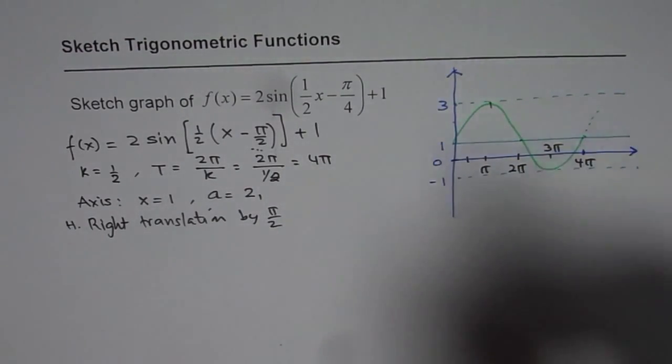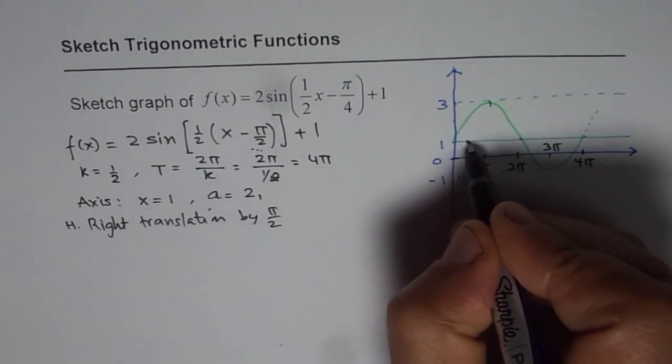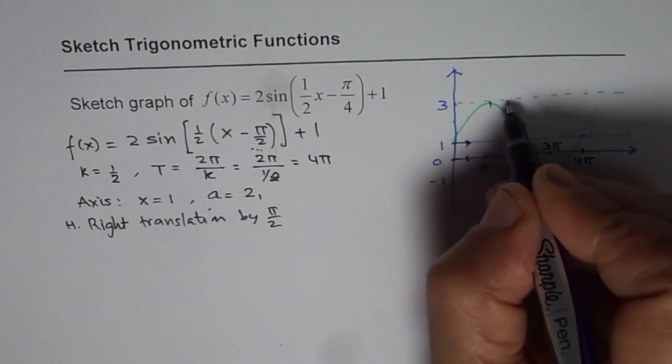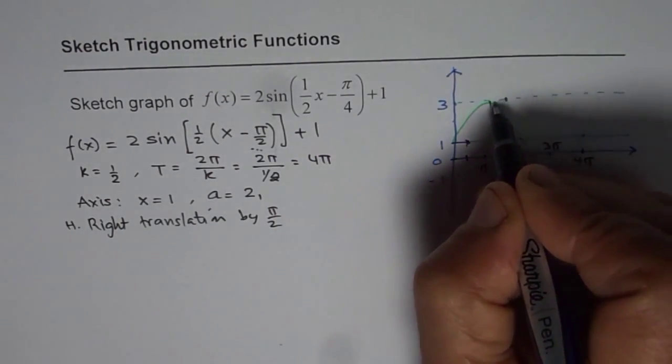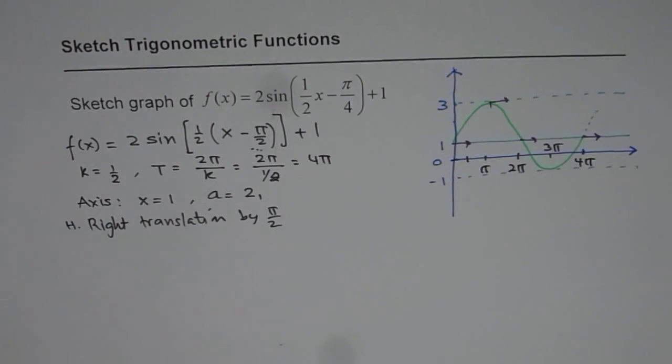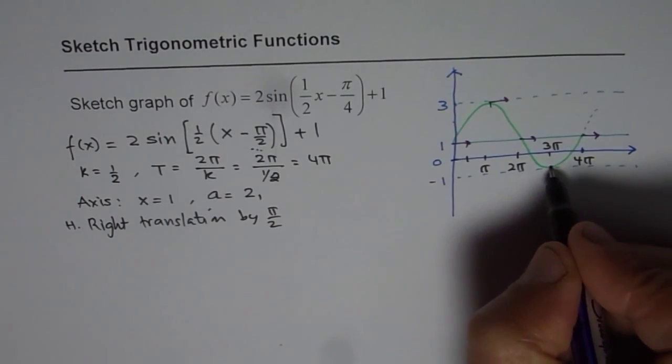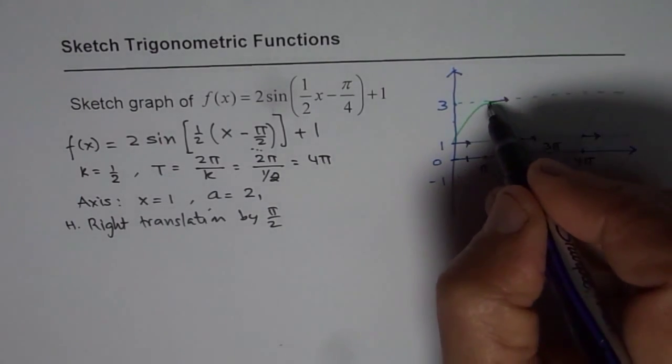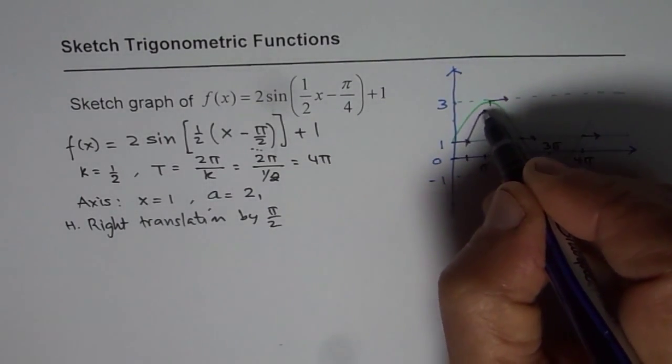So let me use a different ink to show you how to get the final value. So this point will come here. This point will go pi by 2, so it shifts here. This point will be shifted here. That point will be shifted. And the minimum value also shifts to pi by 2. So we get our transformed function.